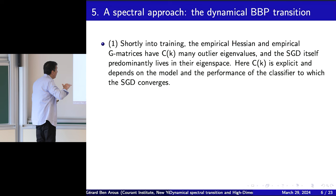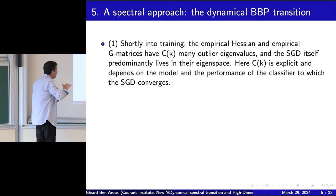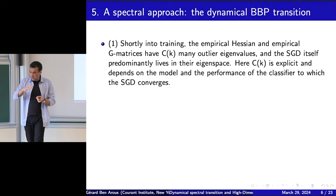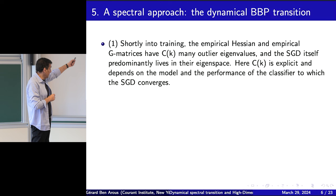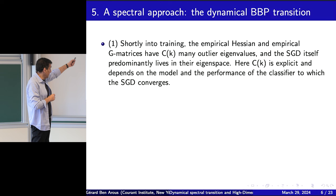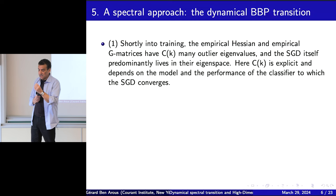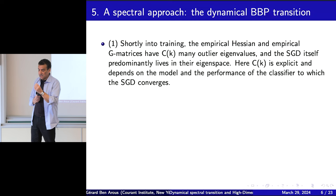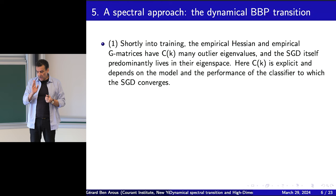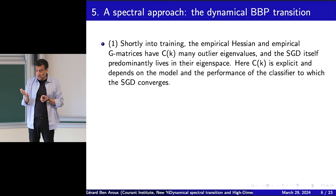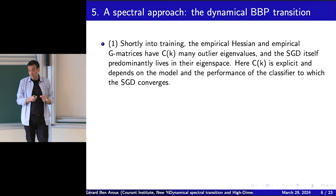The SGD itself predominantly lives in the top eigenspace. The performance of the classifier depends on this. How short is 'shortly'? That depends on the model. In the case when K=1 — the single index model — it was classified by the information exponent. When K=1 it was very fast; K=2 a little slower; K=3 or more very slow. In these models we don't have the notion of an information exponent in general because it's much harder when you're not in dimension 1, but in these examples we see it's short.